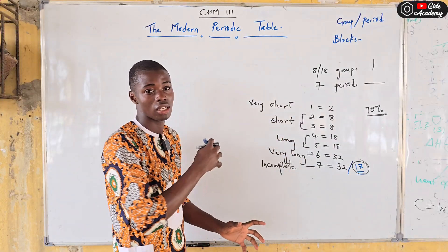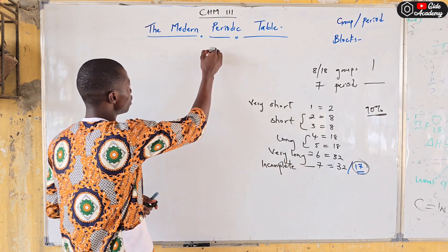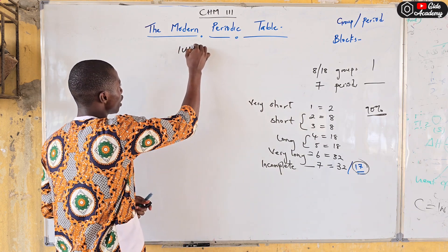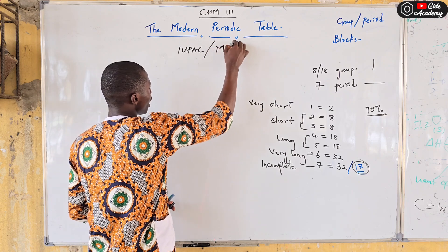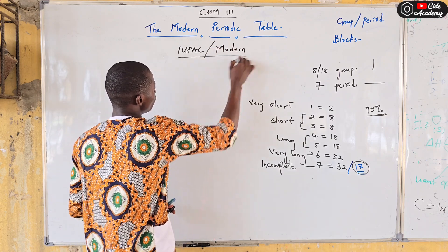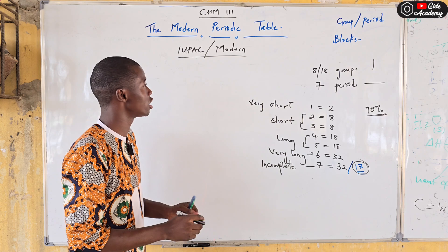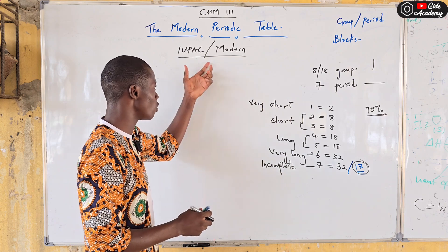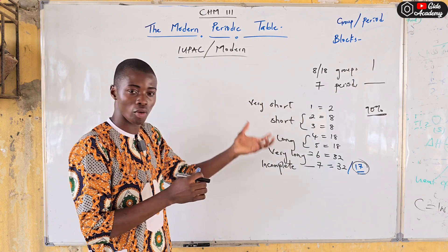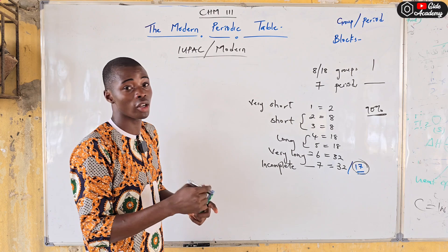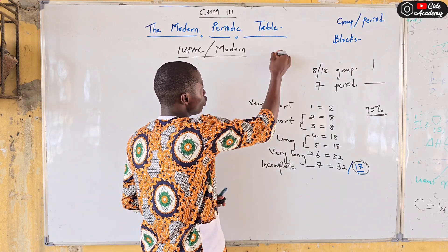This brings us to the next concept: the IUPAC periodic table. We actually have two types of periodic table in the textbook — the IUPAC periodic table and the modern periodic table. These are the two we have to study.